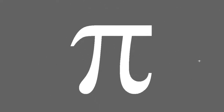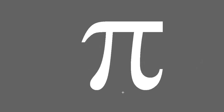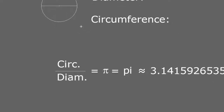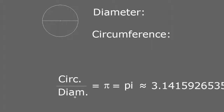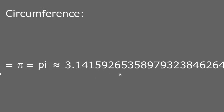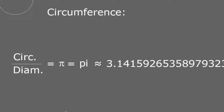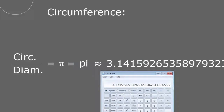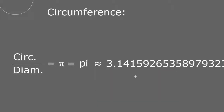Another very famous, commonly known irrational number is pi. Pi relates the diameter of a circle to its circumference. If you know the diameter and multiply it by pi, you get the circumference. Equivalently, if you divide the circumference by the diameter, you get pi. Pi is approximated to many digits in calculators — that is the approximation of pi you can find in most calculators.